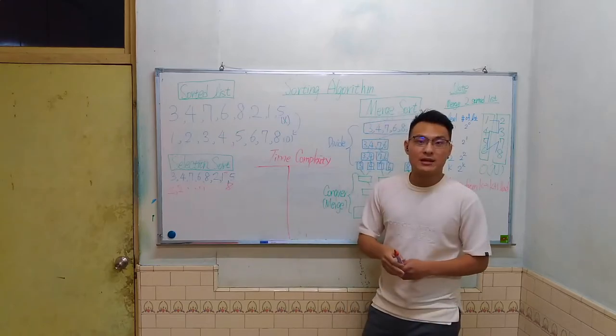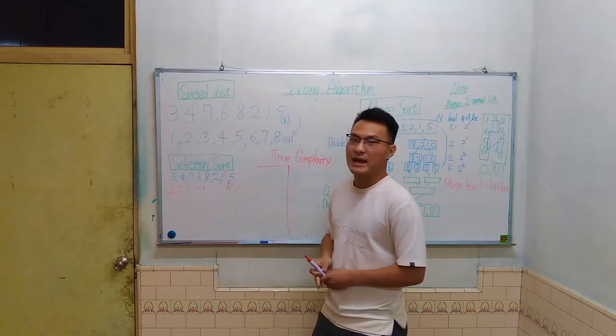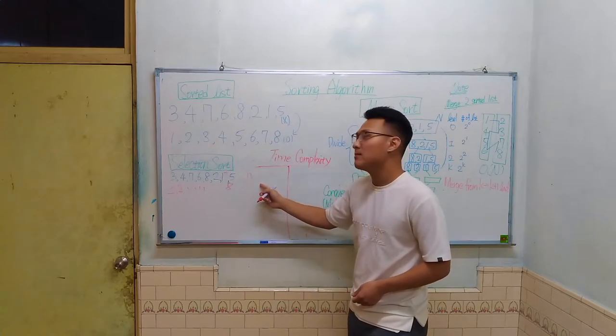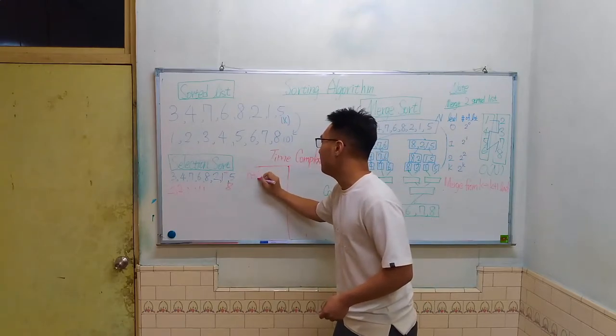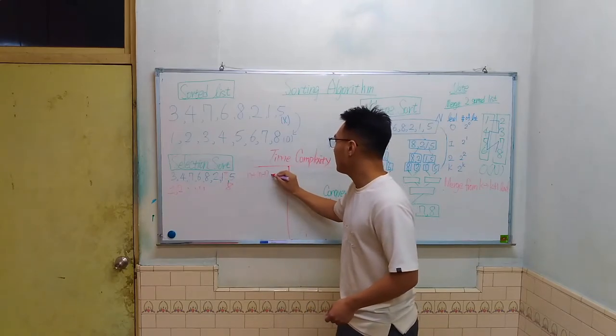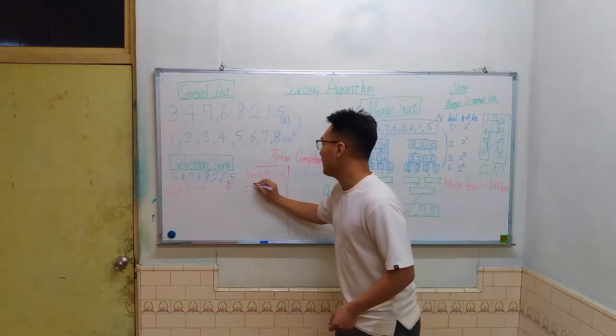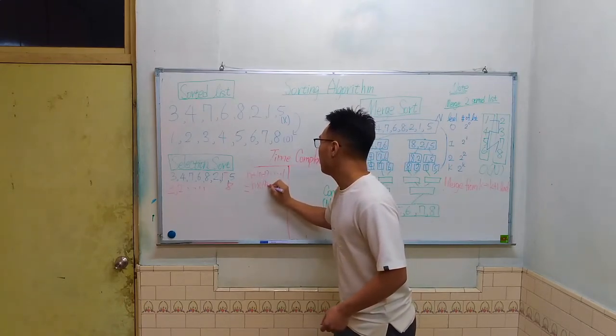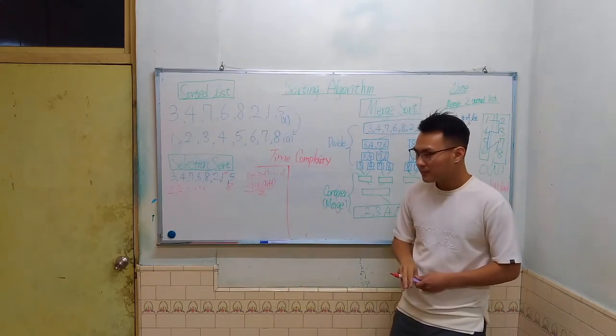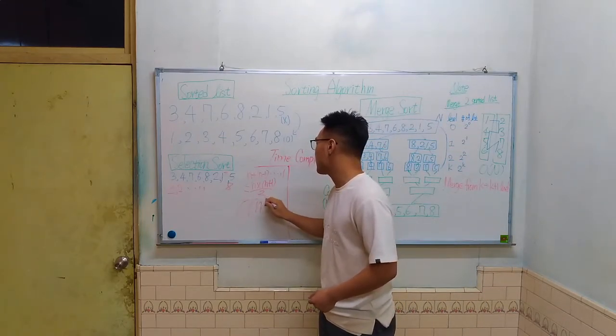However, if we take a look at the time complexity, the first time we have to choose the smallest element will take N to find out the smallest element. And the second time will take N-1 since the first one is removed. And we're going to do this until the last one. So we can conclude that we'll do N multiplied by N plus 1 over 2 to finish the selection sort, which means that the time complexity will be O(N squared).